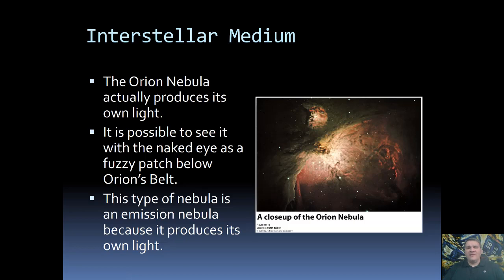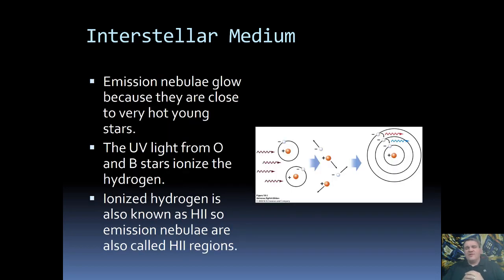Our second type of nebulae are ones that actually produce their own light. These types of nebulae are referred to as emission nebulae because they are emitting light. One great example of this is the Orion Nebula. So, if you're familiar with the constellation Orion, the one that most people are familiar with are the three stars that form the belt, just below that there's this glowing region. That is not stars. That is actually a nebula. The nebula is bright enough it can actually be seen with the naked eye.